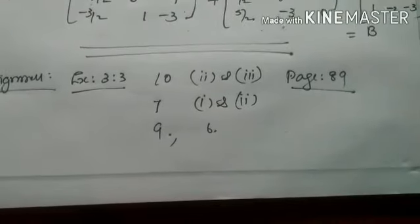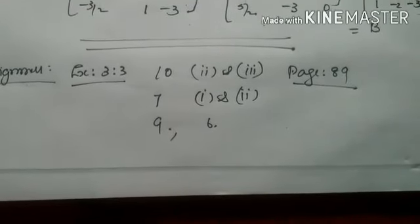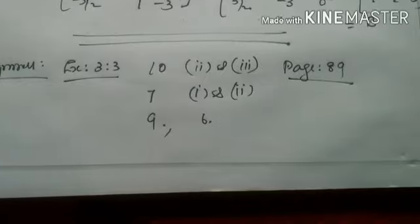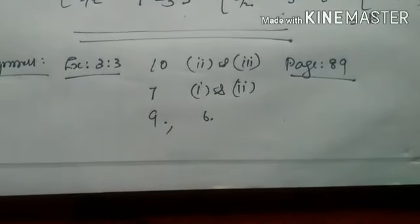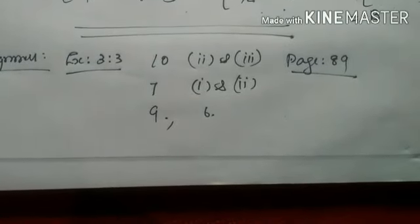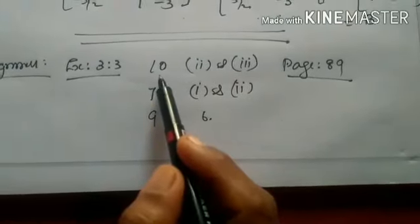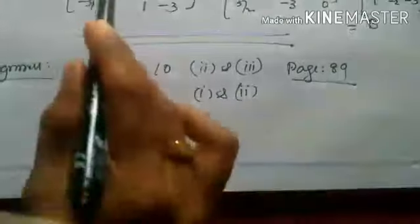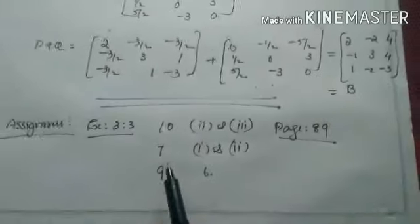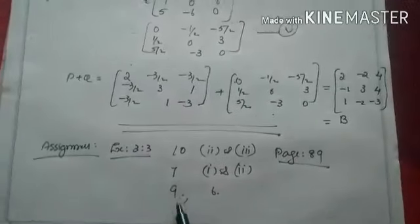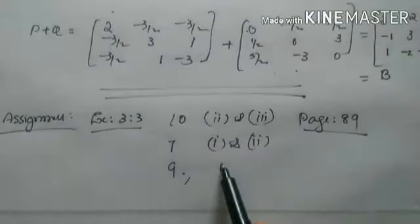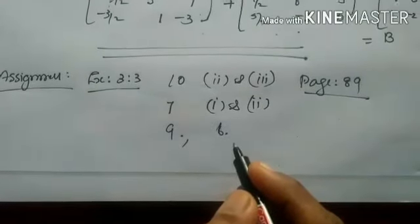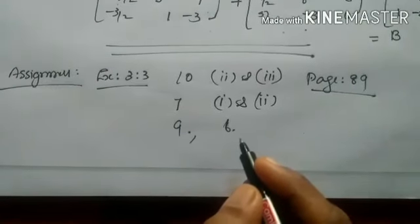You can go through exercise 3.3. The main questions I am giving as assignments. You can go through all the questions — the simple ones at the beginning, and the important ones are question 10, 2nd and 3rd (3×3 matrices of the same type we discussed), 7th, 9th, and 6th questions, which are slightly different. Go through all the questions as they are different types.